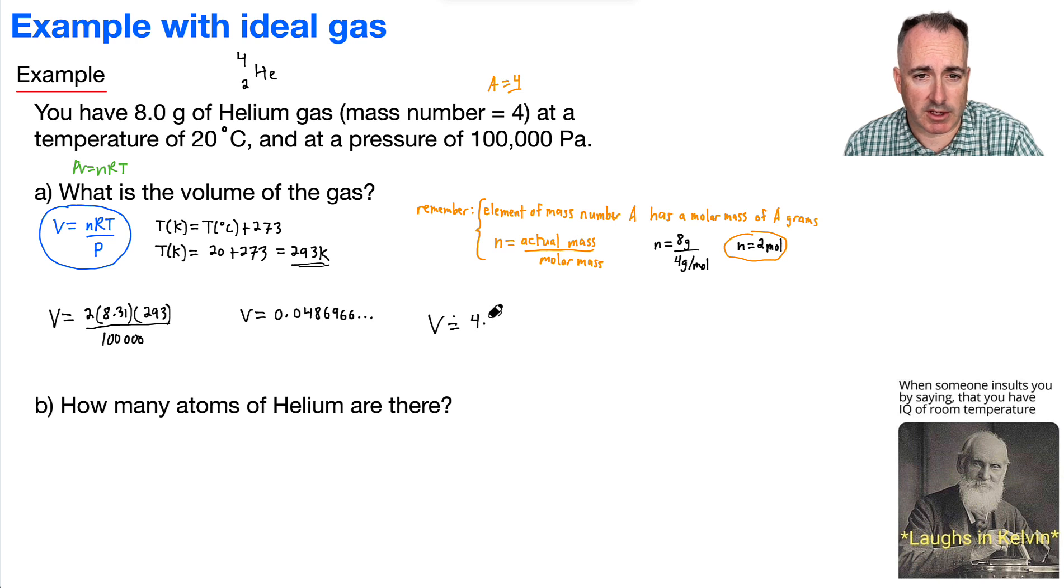I'll do it in scientific notation: 4.9 times 10 to the minus 2. And the units, of course, would be meters cubed. So that's my final answer for this one.